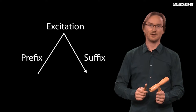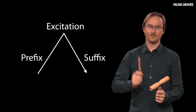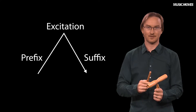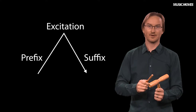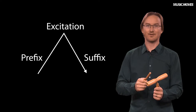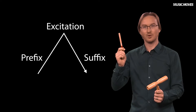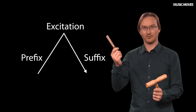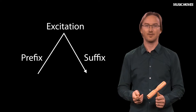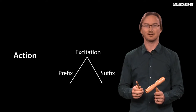We have the prefix, the excitation, and the suffix. The prefix is the part before I hit the stick, in which I build up the momentum and speed of the stick. Then comes the excitation part, which is when sound is actually produced when these two elements collide — an impulsive action with a quick and sudden excitation. Finally, we have the suffix, in which I move the stick back and prepare for a new hit. In real life these are highly connected, but it may still be useful to think of them as three separate elements when we go into an analysis of the sound-producing action.